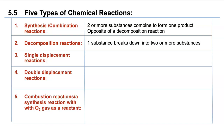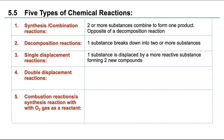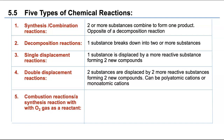One substance breaking down into two or more substances is called decomposition. In a synthesis reaction, many things combine to form one thing. In a single displacement reaction, one substance is displaced by a more reactive substance, forming two new compounds. In a double displacement reaction, two substances are displaced by two reactive substances, forming two new compounds. In both single and double displacement reactions, the compounds are always ionic.